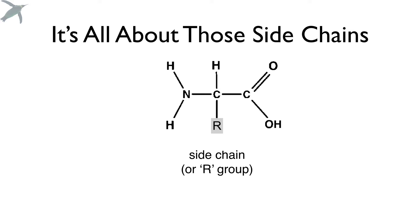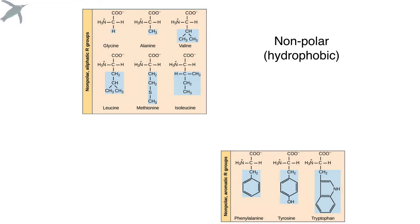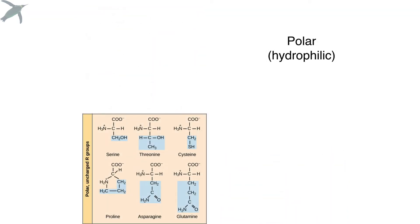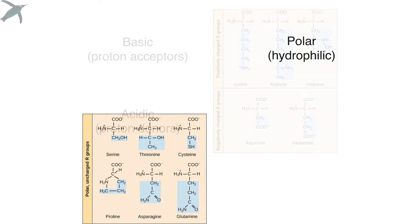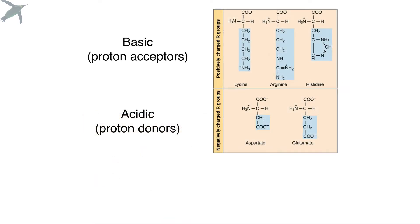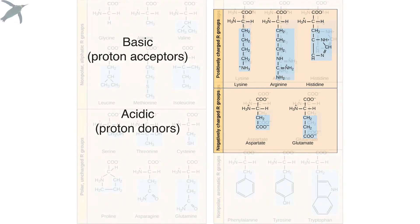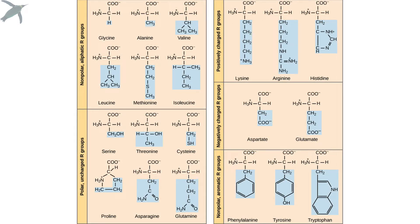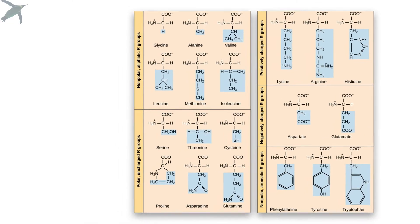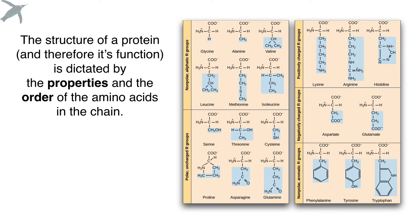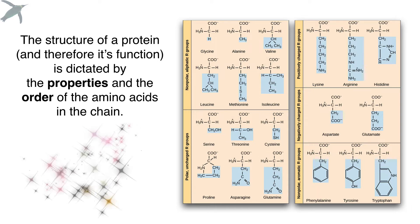It's all about the side chains. That side chain is going to dictate what group the amino acid is in. We've got nonpolar, hydrophobic amino acids — often subdivided based on whether they have an aromatic ring or not. Then we've got polar, hydrophilic amino acids. Then we've got proton acceptors (basic) and proton donors (acidic). These categories dictate how amino acids behave in a protein — the function and structure of the protein is dictated by the order of amino acids in the chain and the properties those amino acids have.